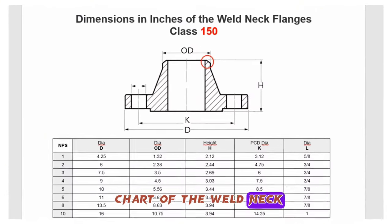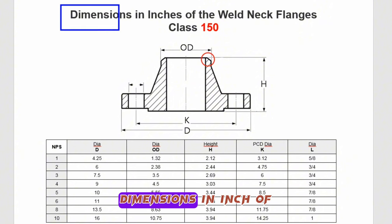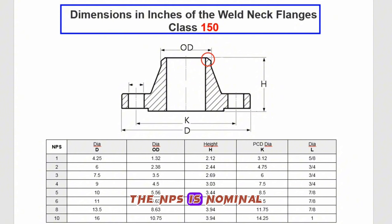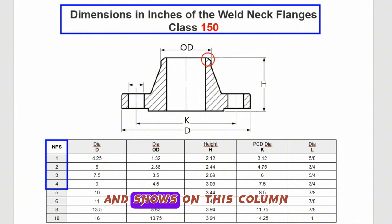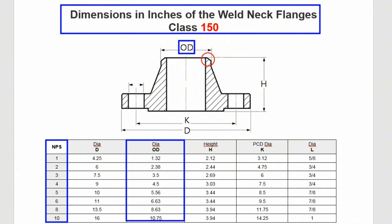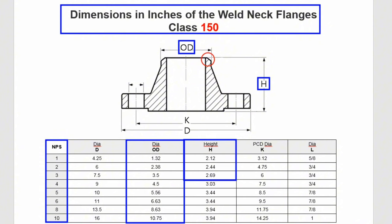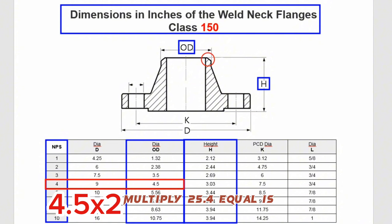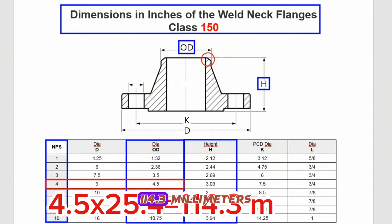Let's look at the chart of the weld neck flange dimensions. This chart shows dimensions in inches for weld neck flanges class 150. The NPS column shows nominal pipe size, the OD column shows outside diameter, and the H column shows the height dimension of the weld neck flange. For nominal pipe size 4 inches, the outside diameter is 4.5 inches — the millimeter equivalent is 4.5 multiplied by 25.4, which equals 114.3 millimeters.